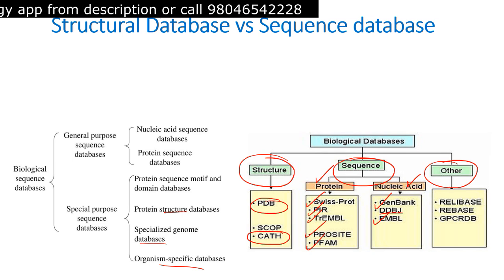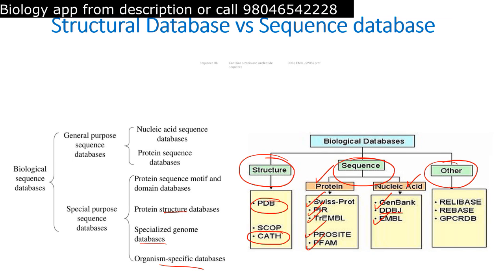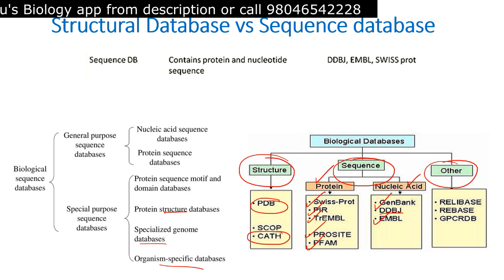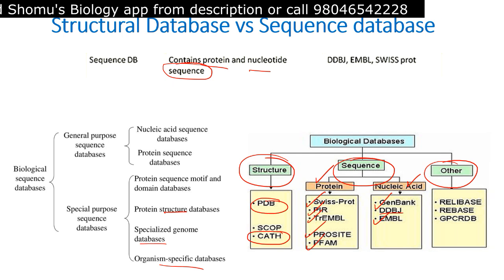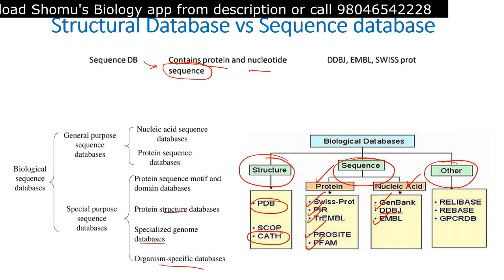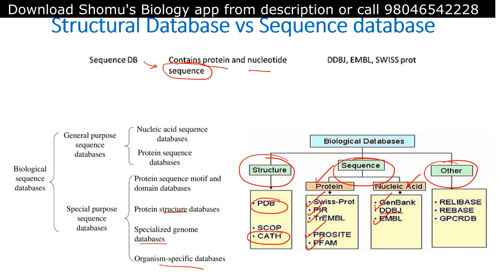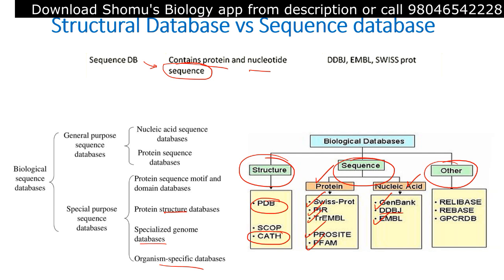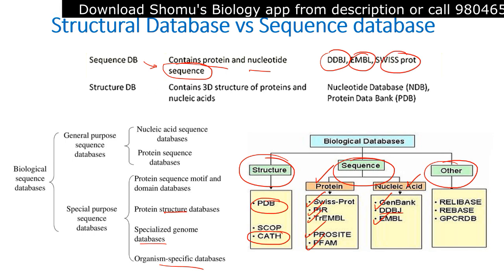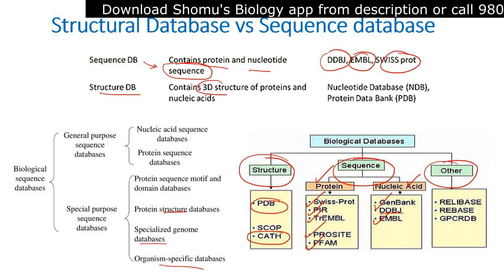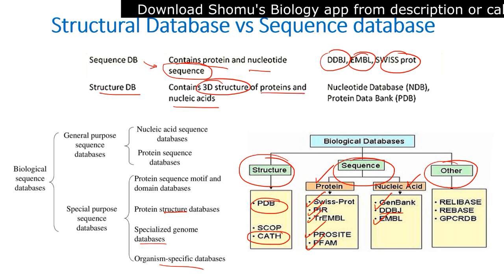Now, the core difference between structural and sequence databases: in the sequence database, we have protein and nucleotide sequences — examples include DDBJ, EMBL, and Swiss-Prot.